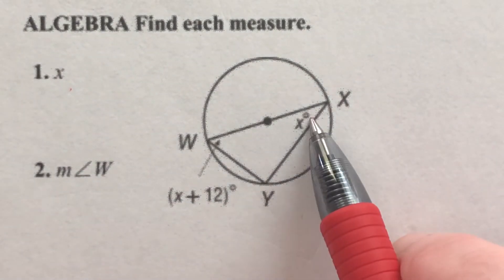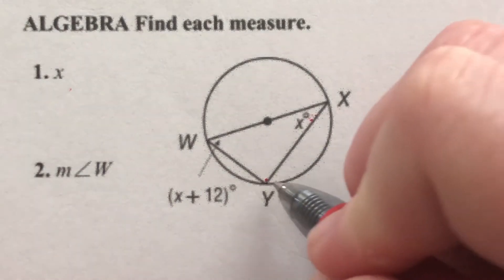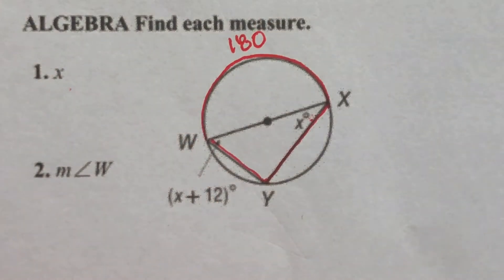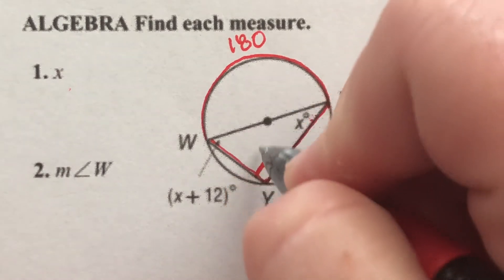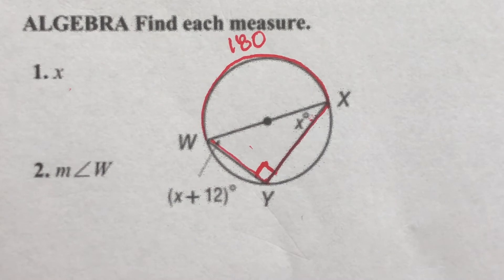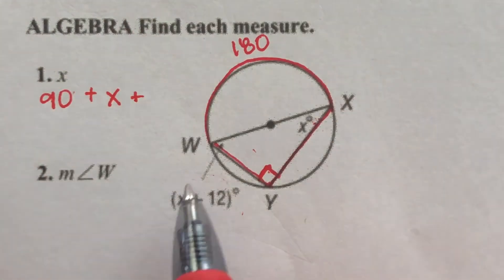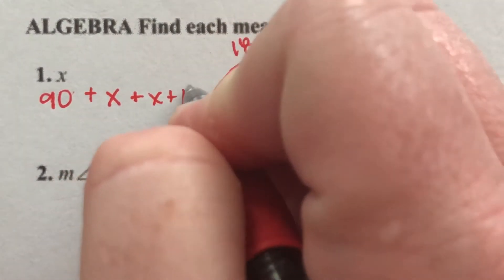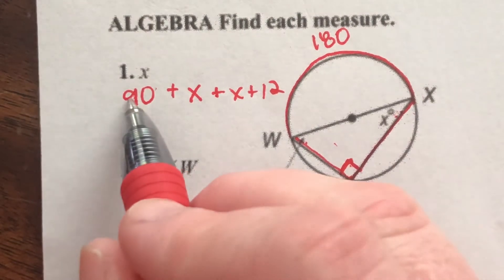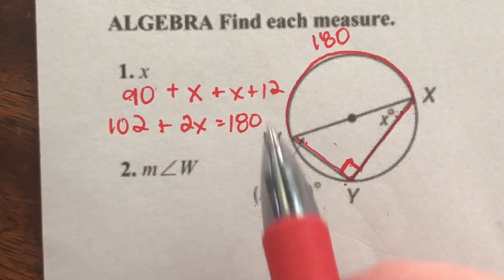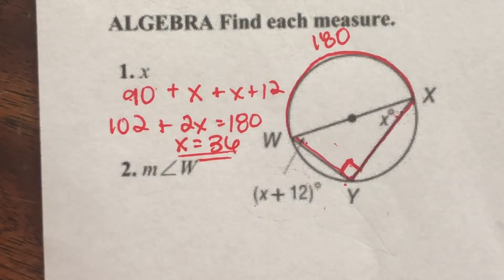For number 1, we are solving for x. This inscribed angle has an intercepted arc of 180 degrees — it's a semicircle — which means this angle has to be 90 degrees. An inscribed angle is half the measure of the intercepted arc; half of 180 is 90. It also gives me angle W and angle X, so those three angles added together have to equal 180. So 90 plus x plus (x plus 12) equals 180. That gives 2x plus 102 equals 180; subtract 102, so 2x equals 78, meaning x equals 39.